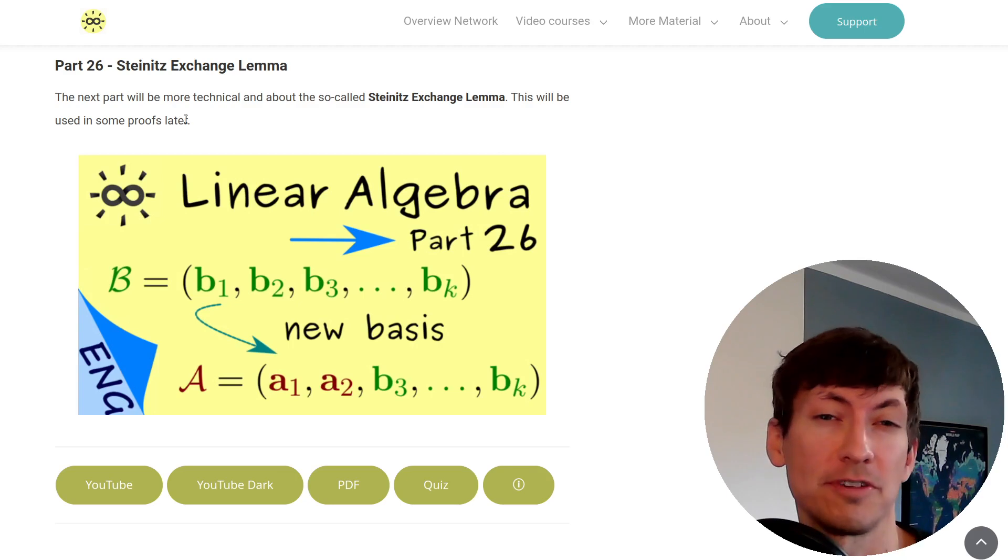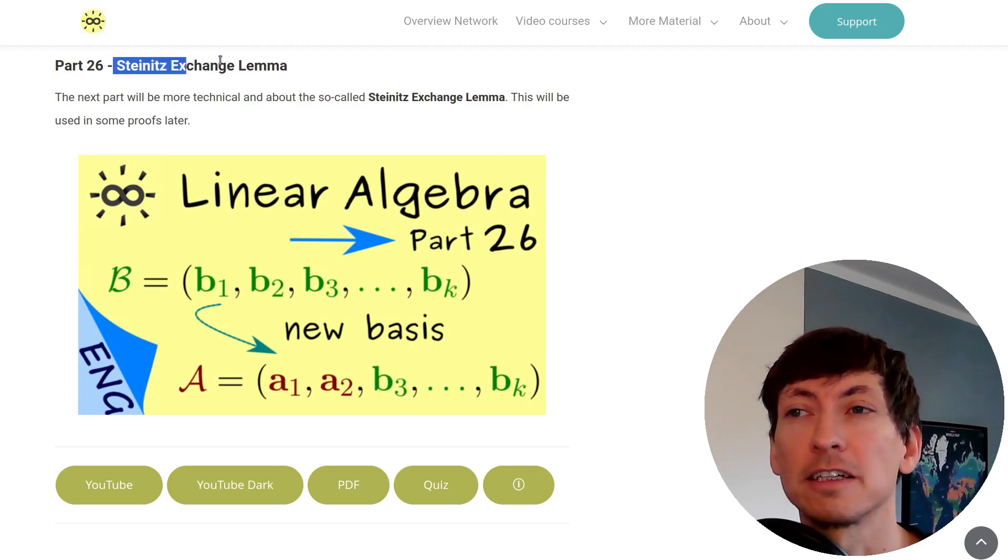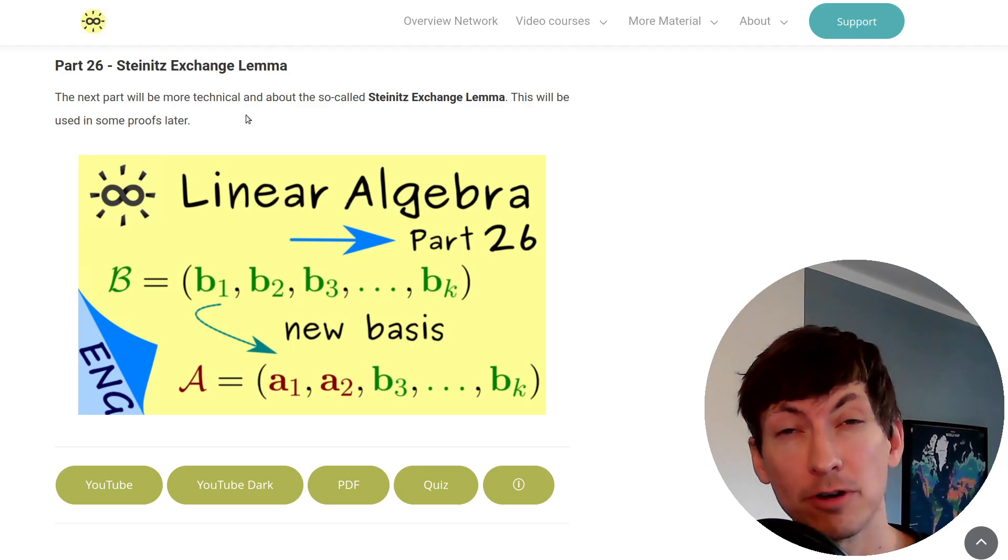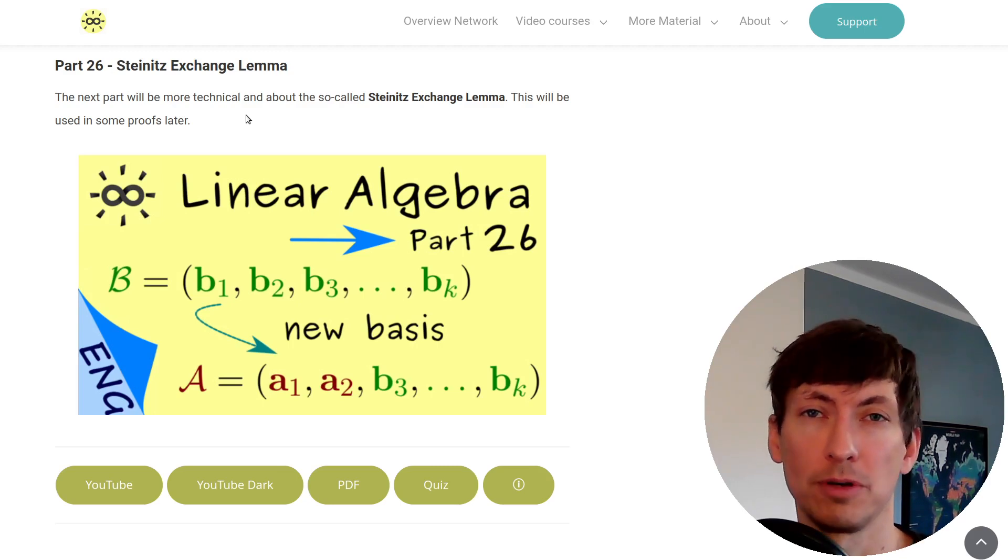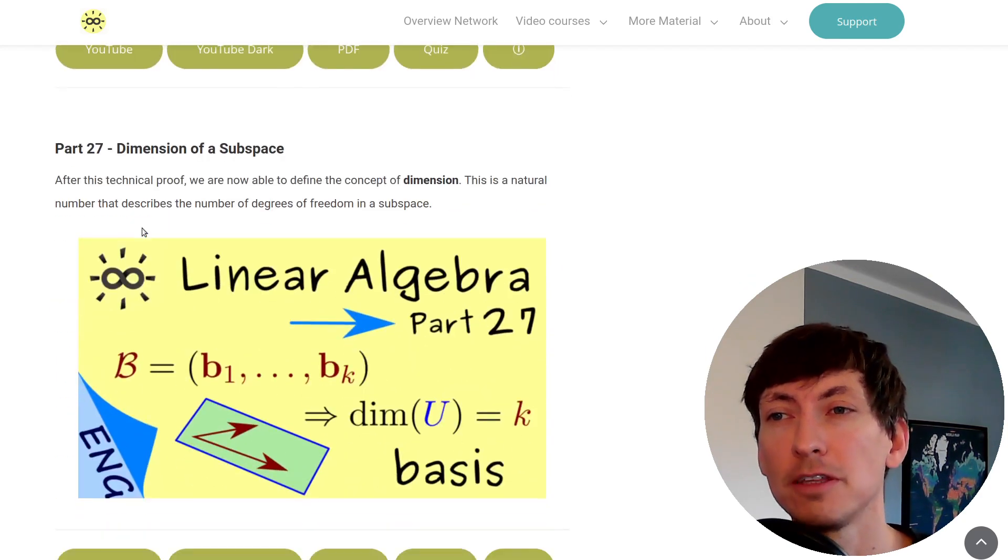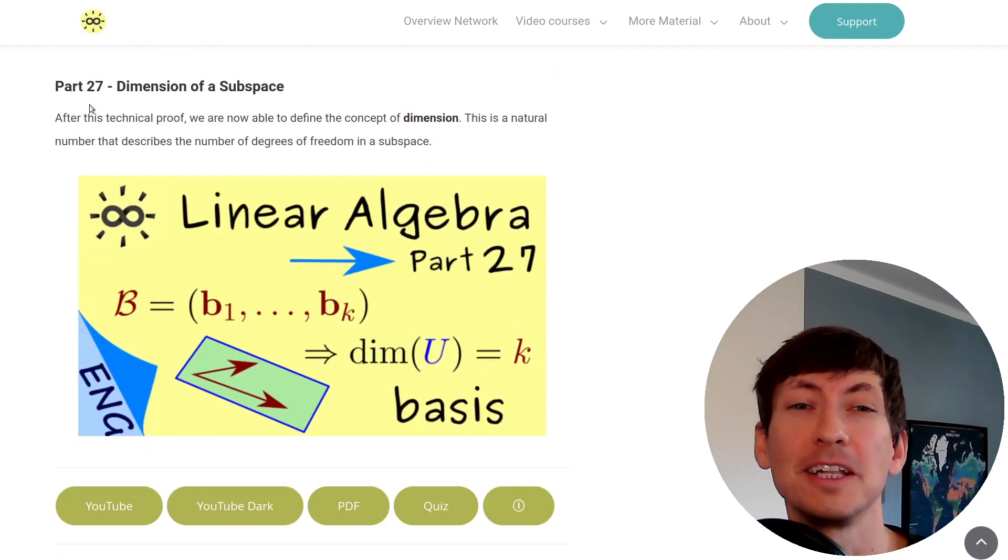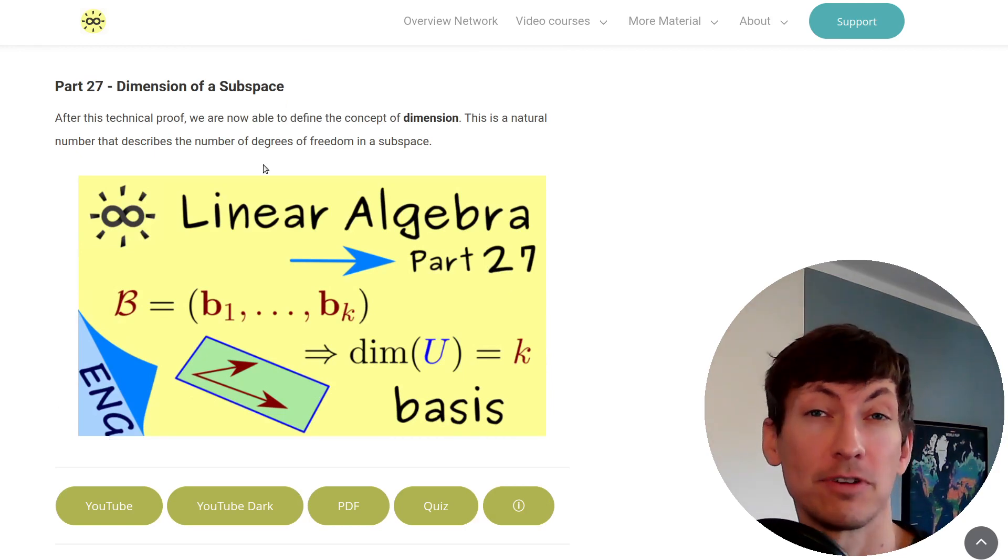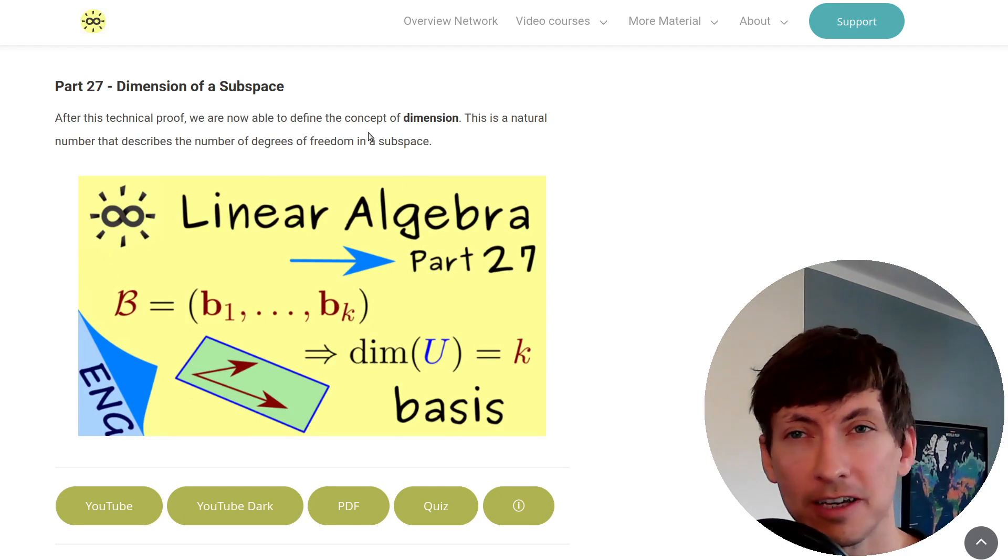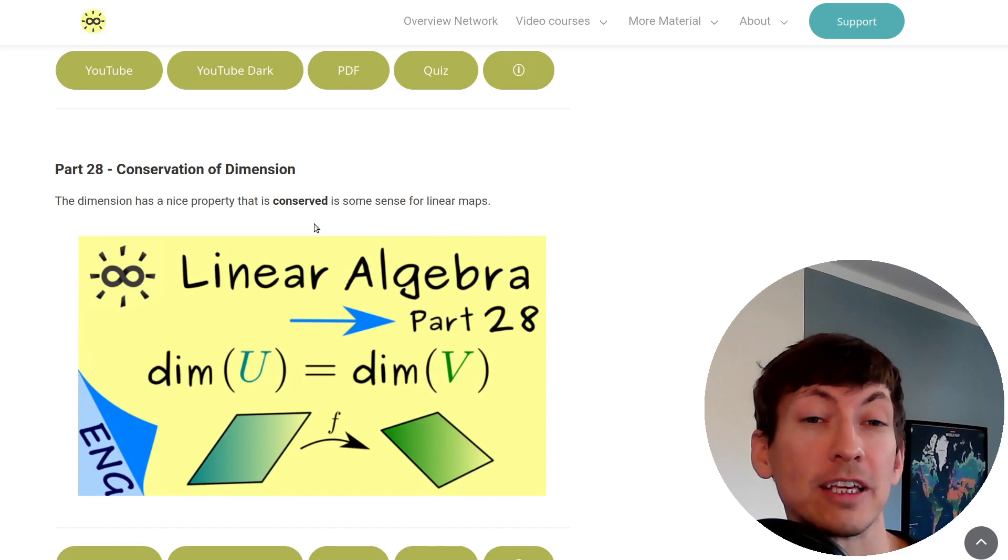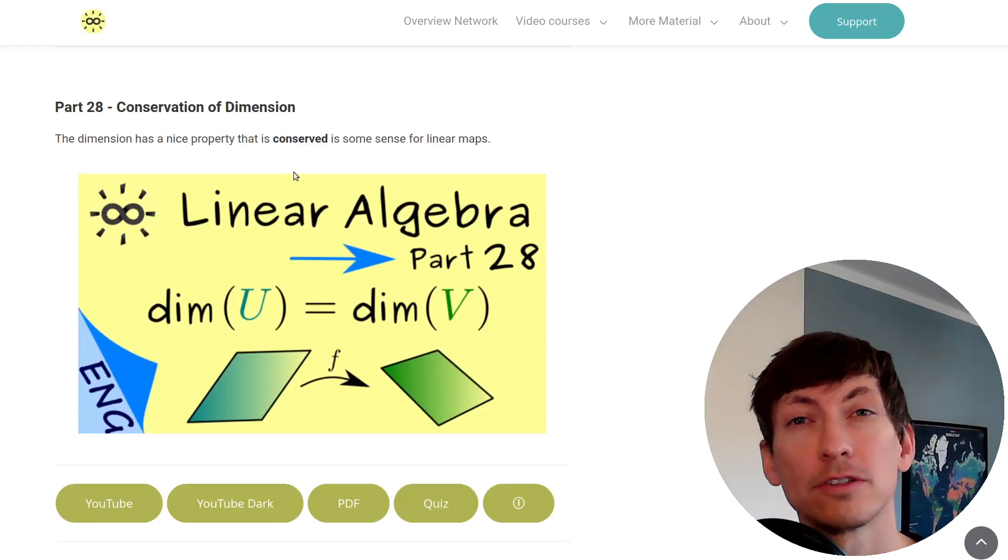This is now a very abstract video because it's about the Steinitz exchange lemma and the proof of it. Therefore I would say if you don't understand that at the moment it's not a problem at all. You can just skip the video and continue with part 27 where we talk about the dimension of a subspace. It's a very important concept but not hard to understand at all because the dimension just counts the number of elements in a given basis. It turns out that this dimension is exactly the object that is conserved under linear maps in some sense. This is not hard to understand but I would say it's one of the most important facts to remember from this course.